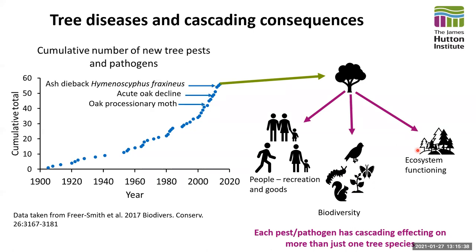In particular, staff at the James Hutton Institute and some colleagues at Forest Research have focused on the impacts of a decline caused by ash dieback, Hymenoscyphus fraxineus, and the impacts of a potential decline in oak that could be caused by acute oak decline or some of the other diseases affecting oak trees such as the oak processionary moth.